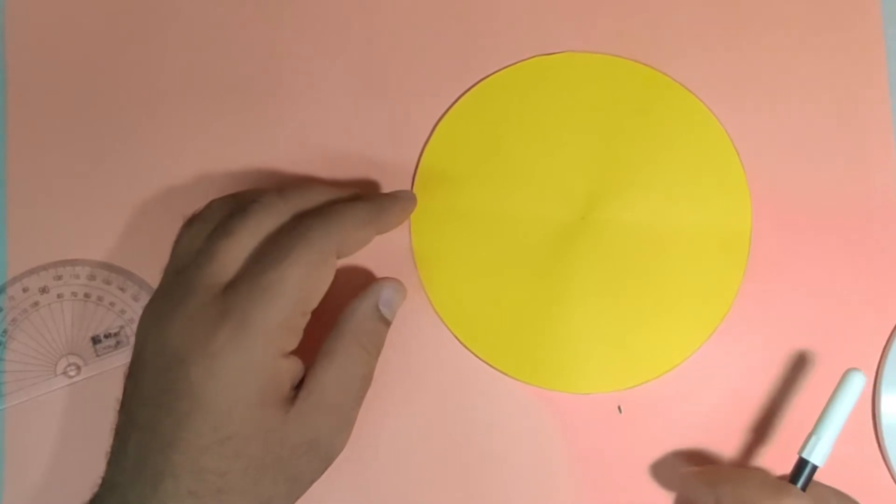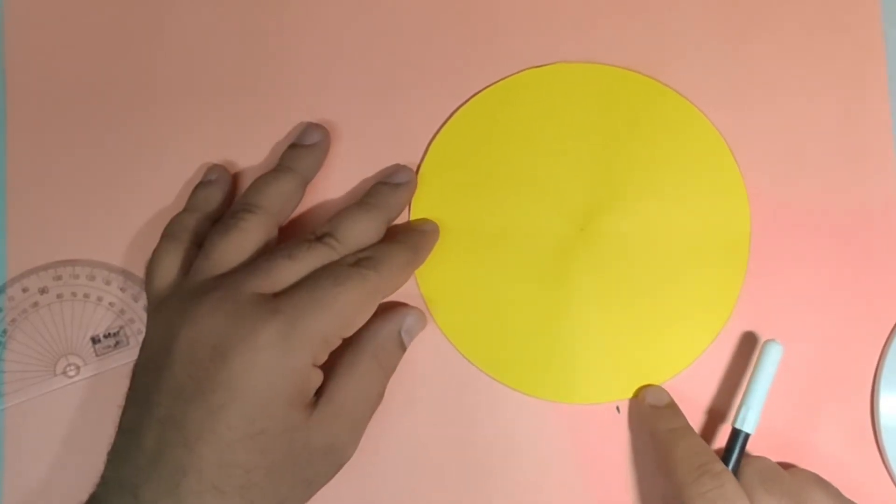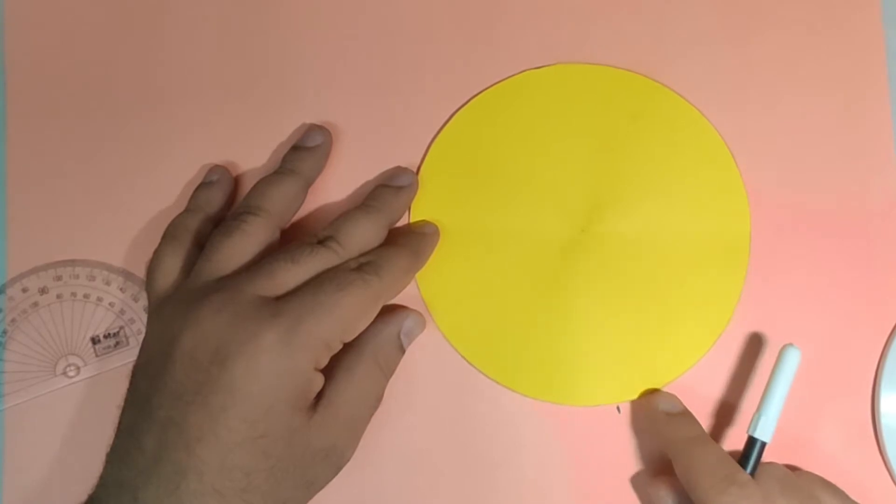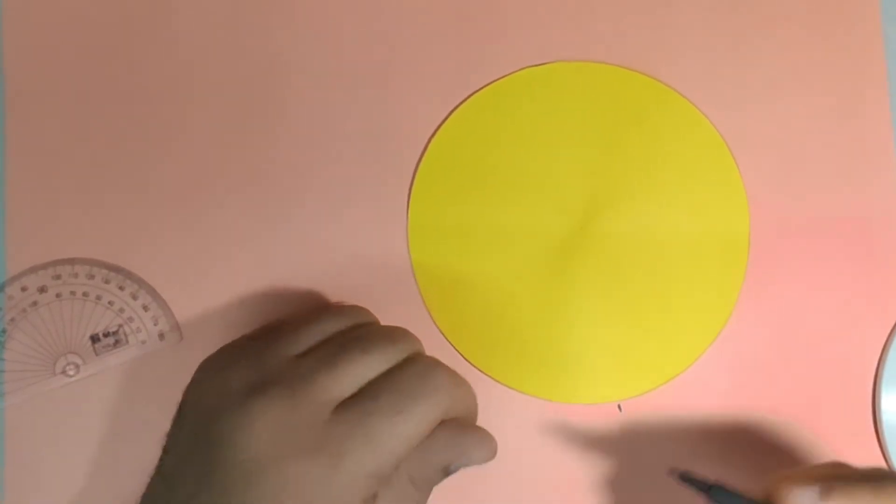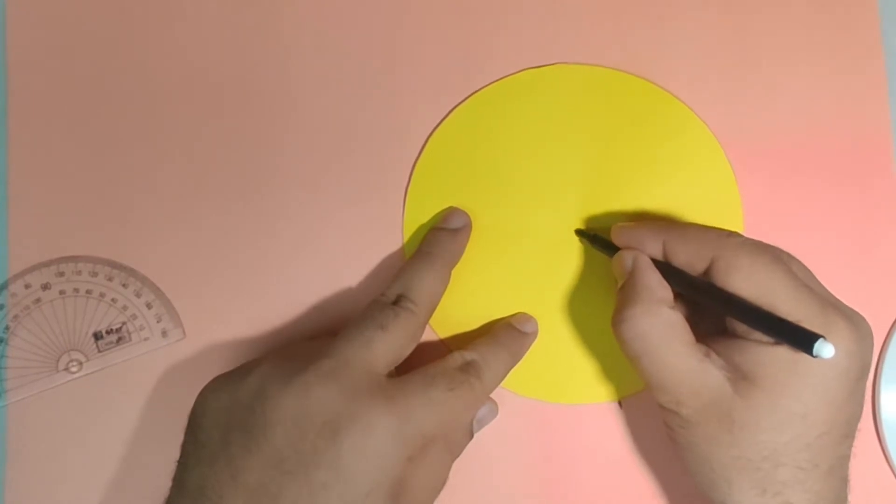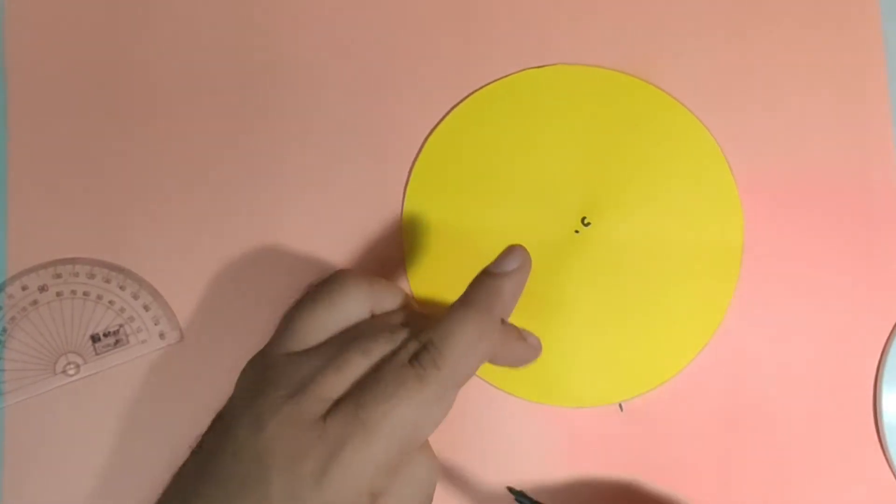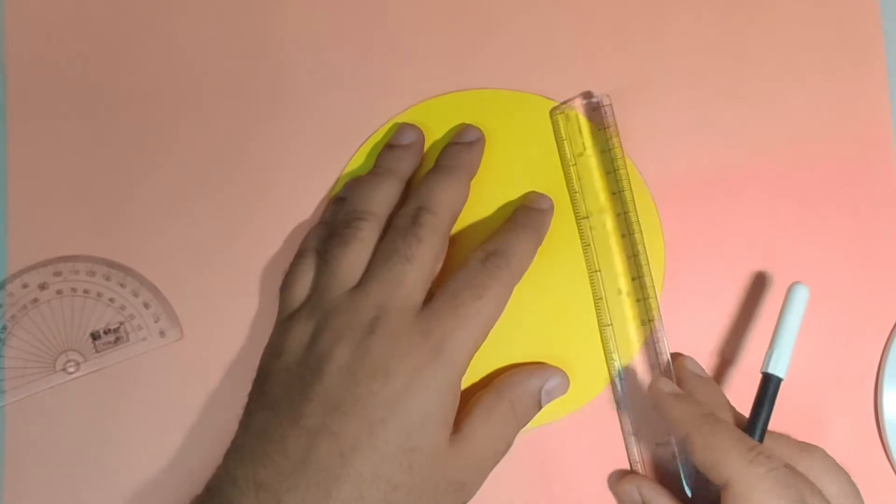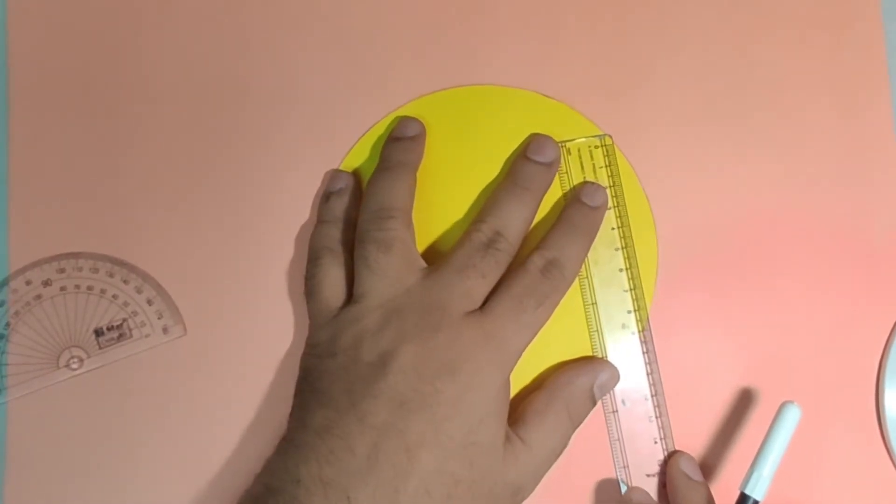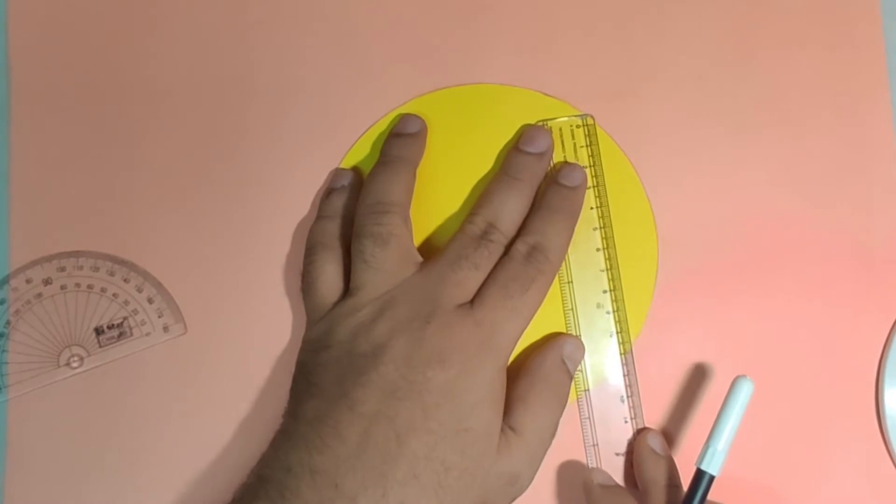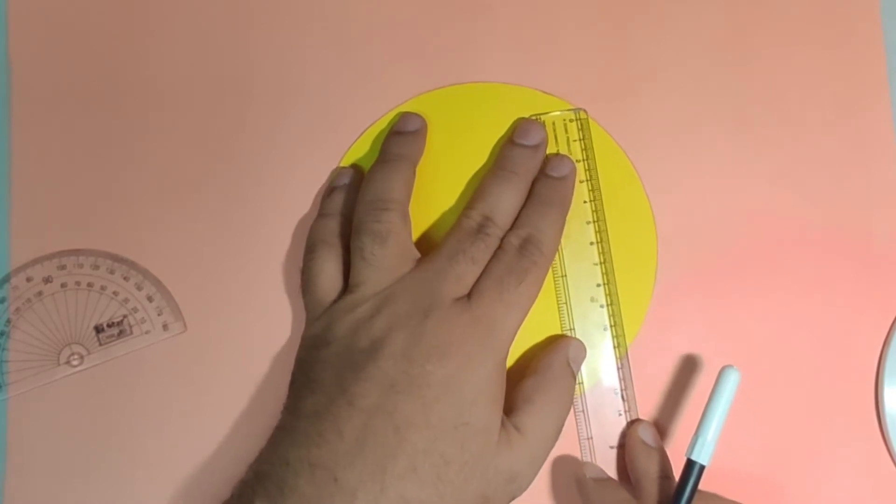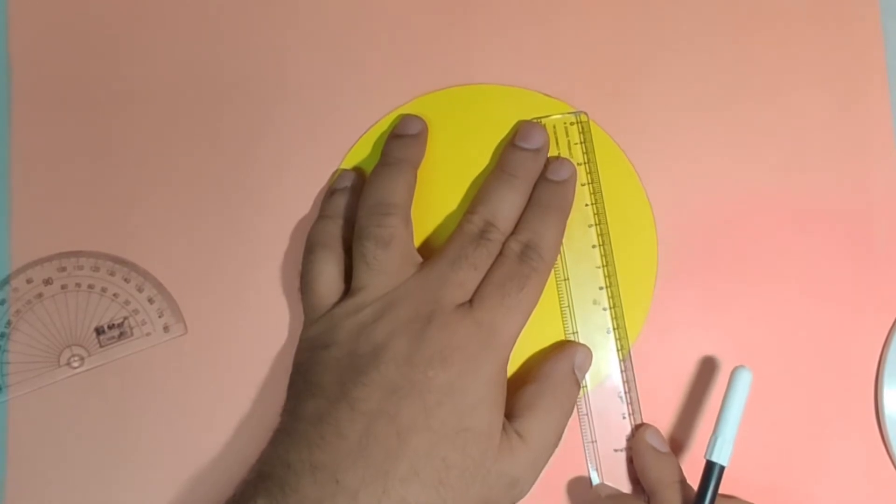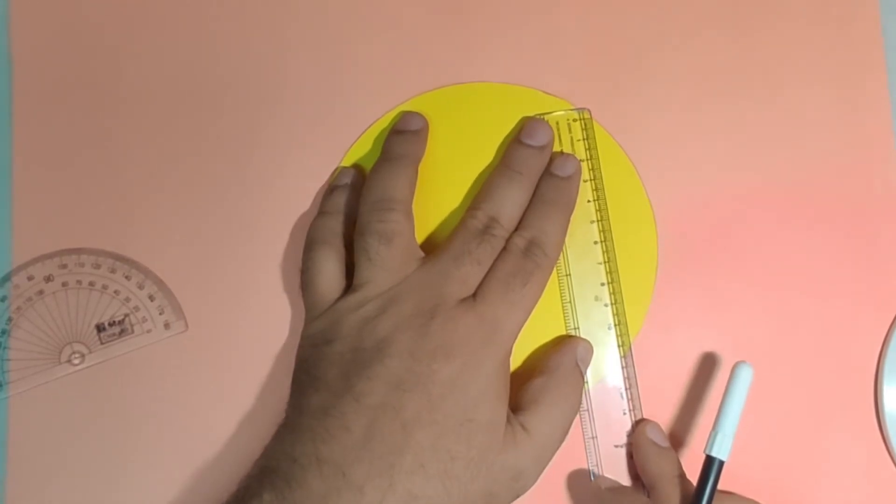Angle subtended by equal chords of a circle are equal. Let us verify this activity using paper folding process. I have taken a circle and let us mark the center of the circle as C. I will mark two chords of equal length using the scale. I am taking approximately 11 centimeter chord in this circle.